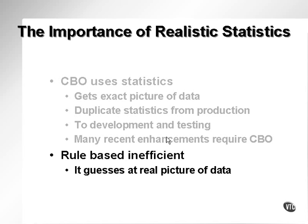The SQL code optimizer utilizes statistics to compile the most efficient methods of executing SQL statements. Statistics are measurements of the data itself, such as how large a table is and how useful an index is. When a SQL statement accesses a table, particularly in OLTP databases with small transactions, the states of both tables and indexes are important in relation to statistics. They have to be up-to-date and they have to be realistic.